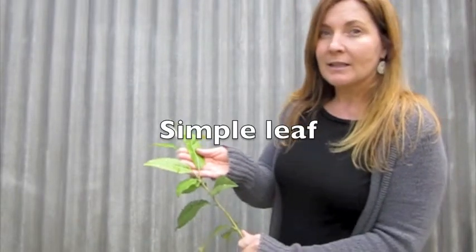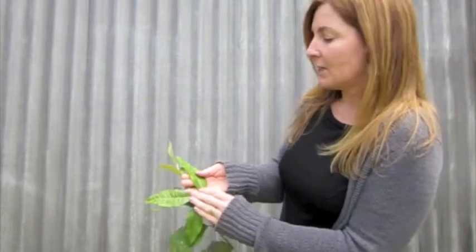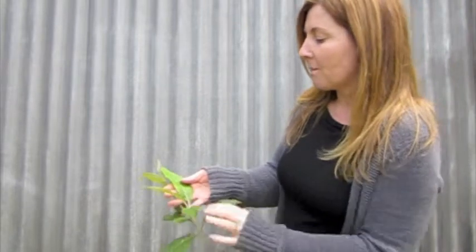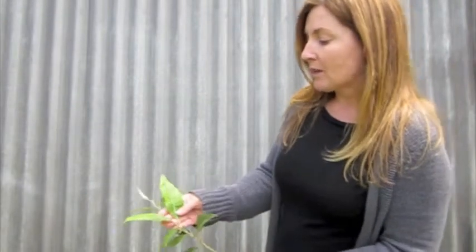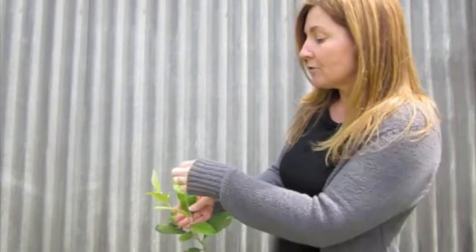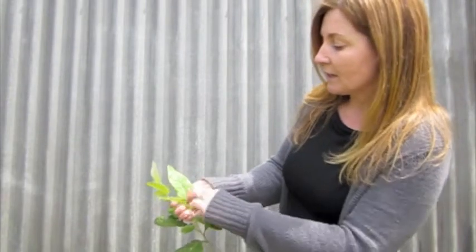This dicotyledon has a simple leaf, so an entire leaf. Also remember with the dicotyledons, they have a central vein with lateral veins coming off them.